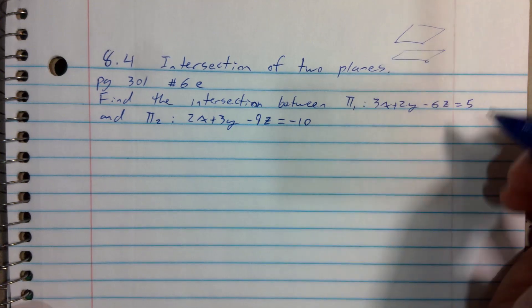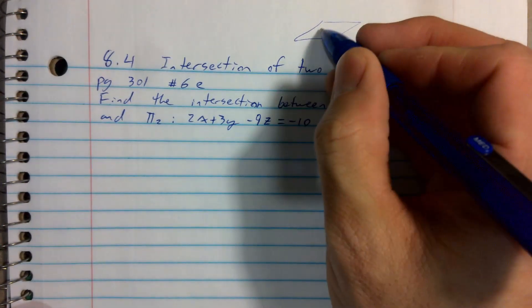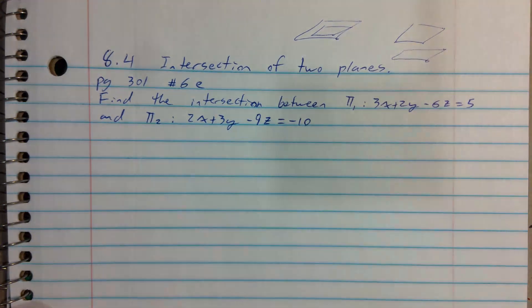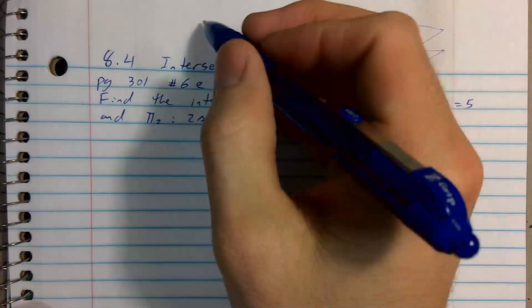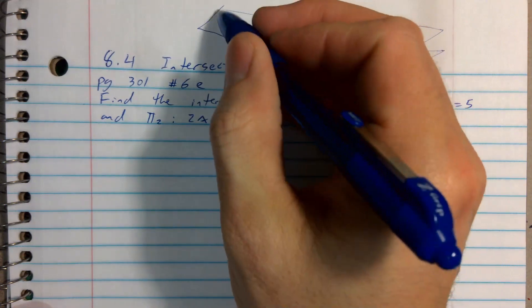So we have two planes and from our lesson we know possible orientations. They might be parallel, meaning they wouldn't intersect. They might be co-planar or coincident, meaning that there's a plane of intersections. The only other possibility is having a line of intersection.